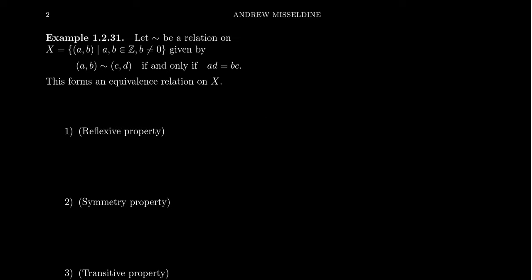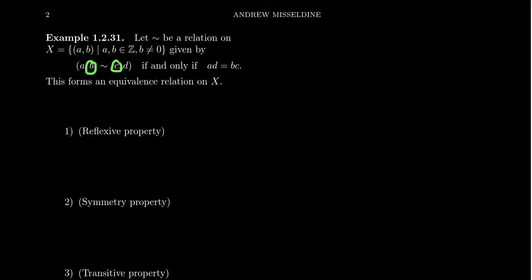Let's see some quick examples. Take as our set X the set of ordered pairs of integers (A, B) such that B is not zero. We define an equivalence relationship: the pair (A, B) is related to (C, D) if the product AD equals BC. So we take the first term of the first pair times the second term of the second pair, and that should equal the product of the second term of the first pair times the first term of the second pair. If that holds, we say the two pairs are equivalent.